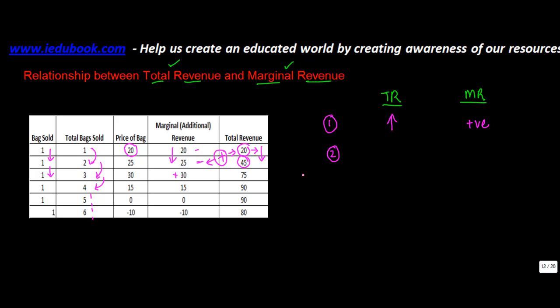The second relationship. If you refer to case 3 and case 4, the marginal revenue which was 30 has come down to 15 when the fourth bag was sold. But because this was positive, the total revenue still increased. Now, let's see case number 5. In this case, the sale of an additional bag did not result in any increase — marginal revenue is 0. When marginal revenue is 0, the total revenue does not change, and across this table the total revenue is at its maximum. So when marginal revenue is 0, total revenue is maximum.